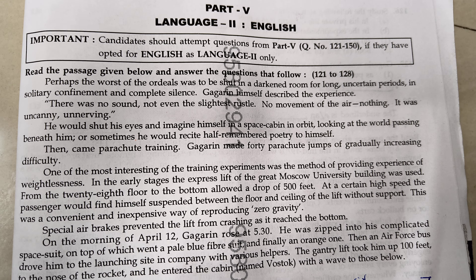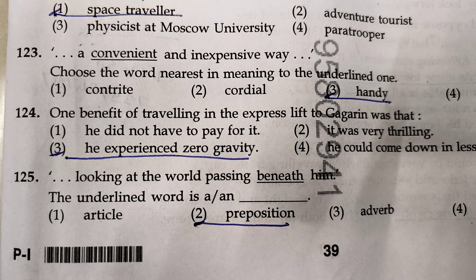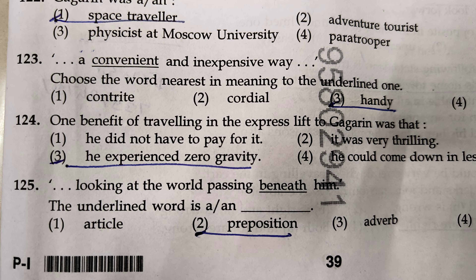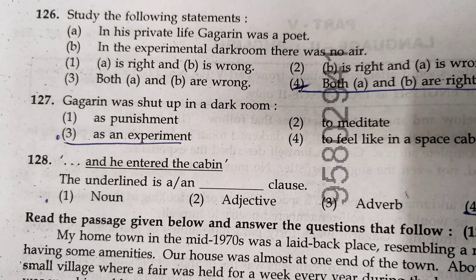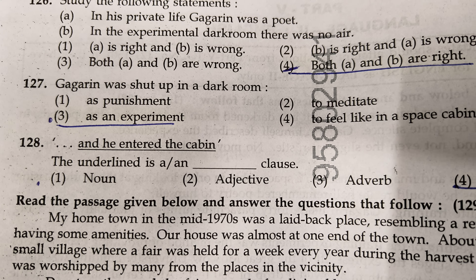This is the first paragraph. Question 121, answer is third one. 122, answer number 1. 123, third one — handy. 124, third one — 'he experienced zero gravity.' 125, beneath — second one, preposition. 126, fourth one — A and B are right. 127, third one is correct. 128 — 'and he entered the cabin' — the answer is coordinate clause, because 'and' is given here.